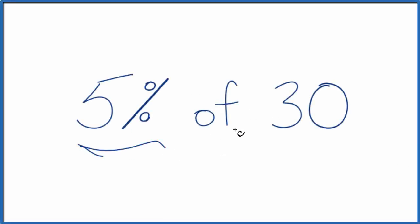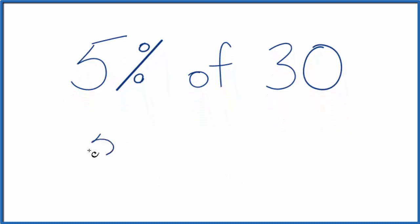Let's find 5% of 30. When we think about percent, the word percent means per 100. So we could take 5 per 100, and now we have a fraction, 5 over 100. It's the same thing as 5%. 5 is 5% of 100.